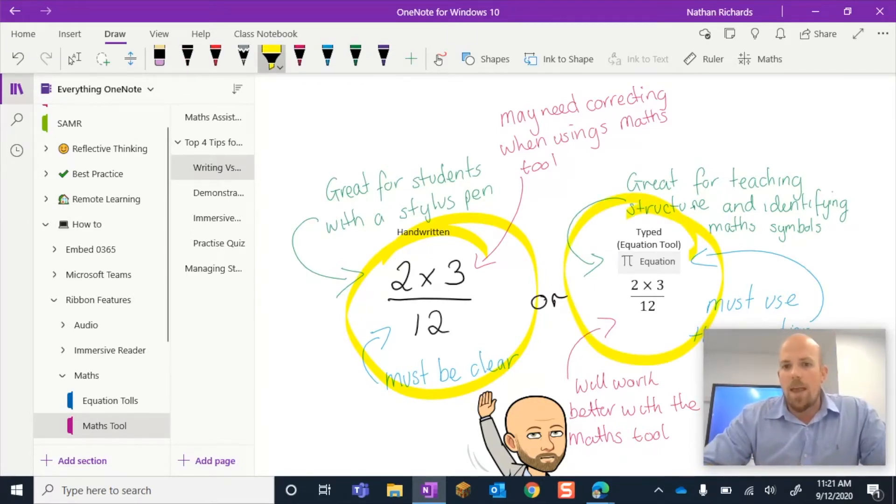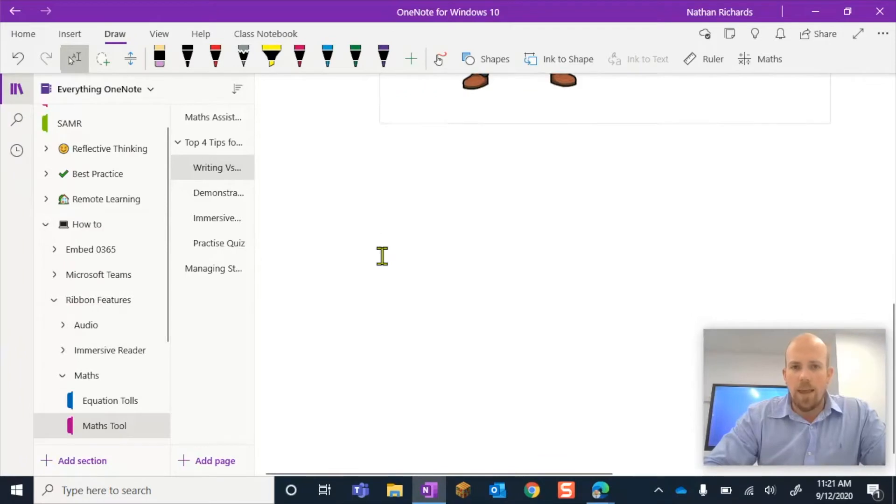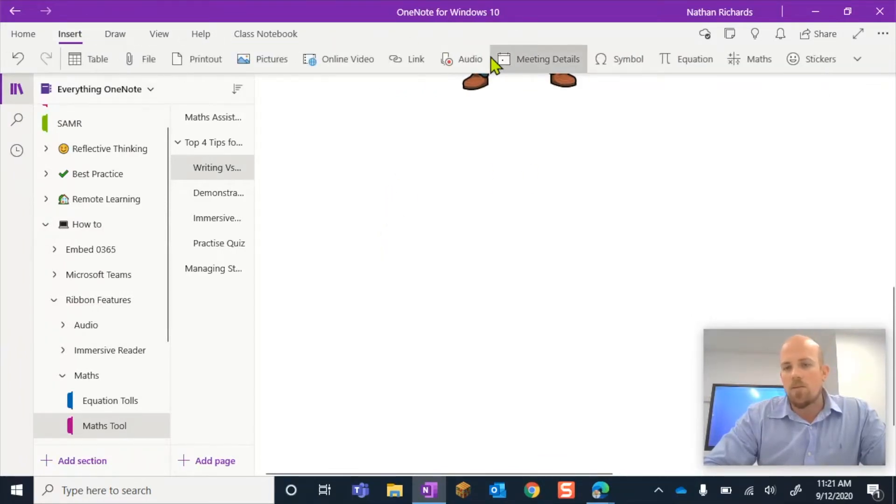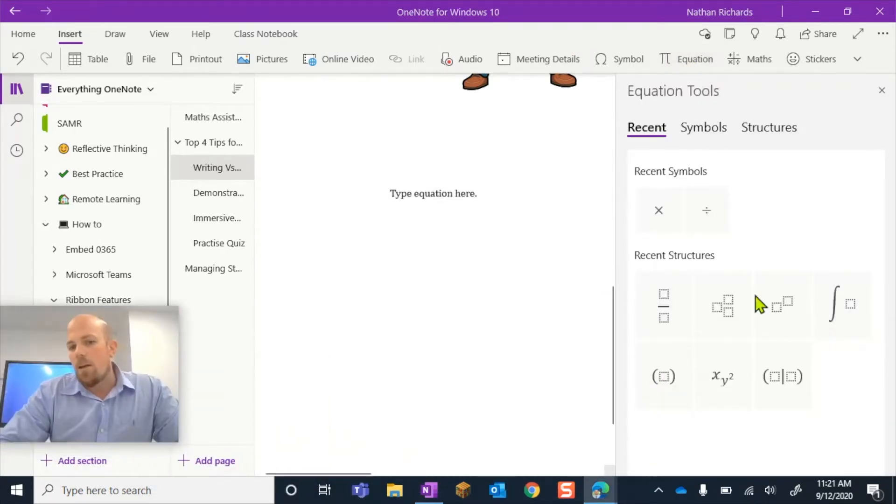The other option here is using the equation tool. So that is this one over here on this side. So in a way, just typing out the equation. And what I might do is I'm just going to drop down here and we'll have a look at how that works. So when I'm here in the insert ribbon, you have this option here for equations.